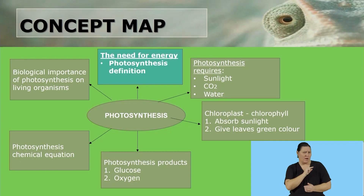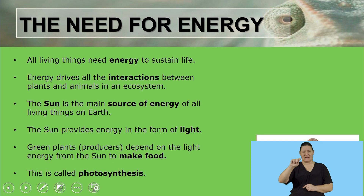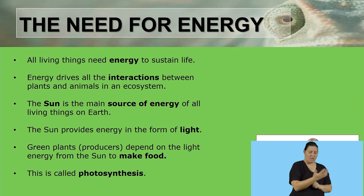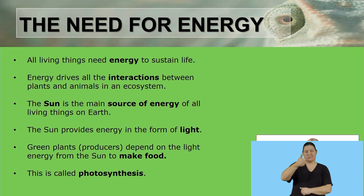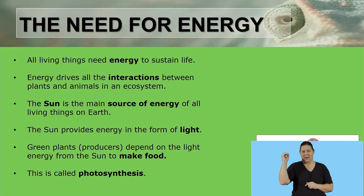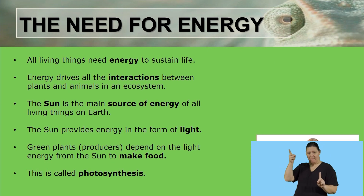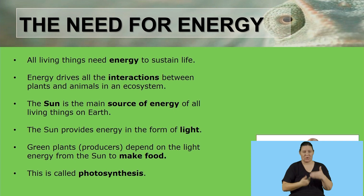Welcome back. Now we are going to look at our first concept for this lesson, which is the need for energy, and here we are going to look at the definition of the term photosynthesis. All living organisms need energy to sustain life. Energy drives interactions between plants and animals in an ecosystem. The sun is the main source of energy for all living organisms on earth. The sun provides energy in the form of light. Green plants, which are known as producers, depend on the light energy from the sun to make their own food. This is done through the process of photosynthesis.